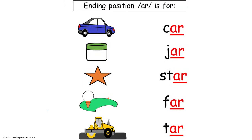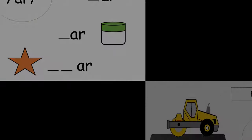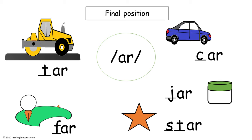Now introduce kids to words that end in the A-R R-Controlled Vowel: car, jar, star, far, and tar. Now have kids make words with the A-R sound in the final position. The answers are car, jar, star, far, and tar.